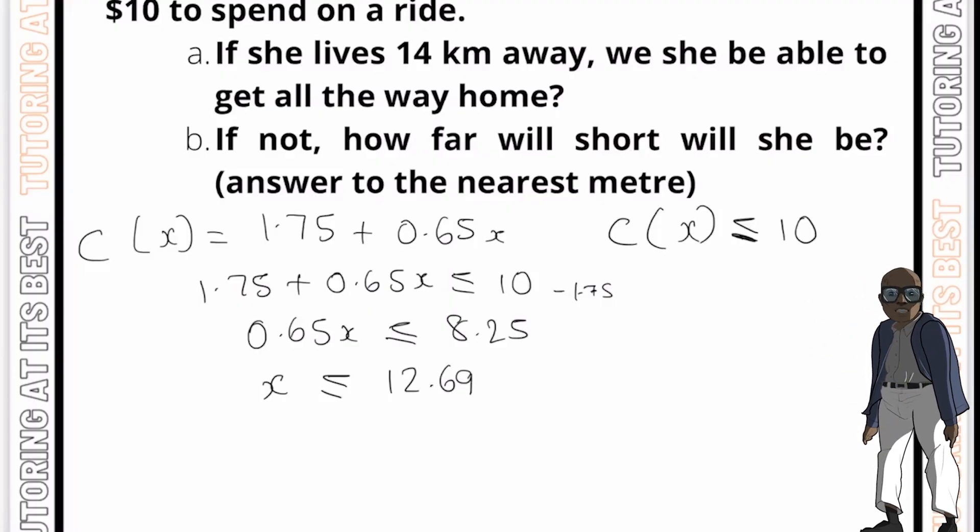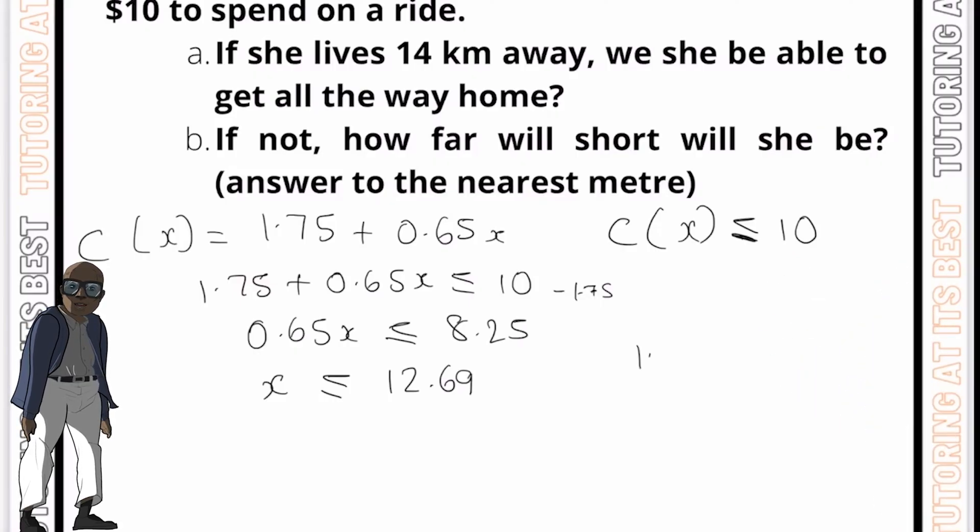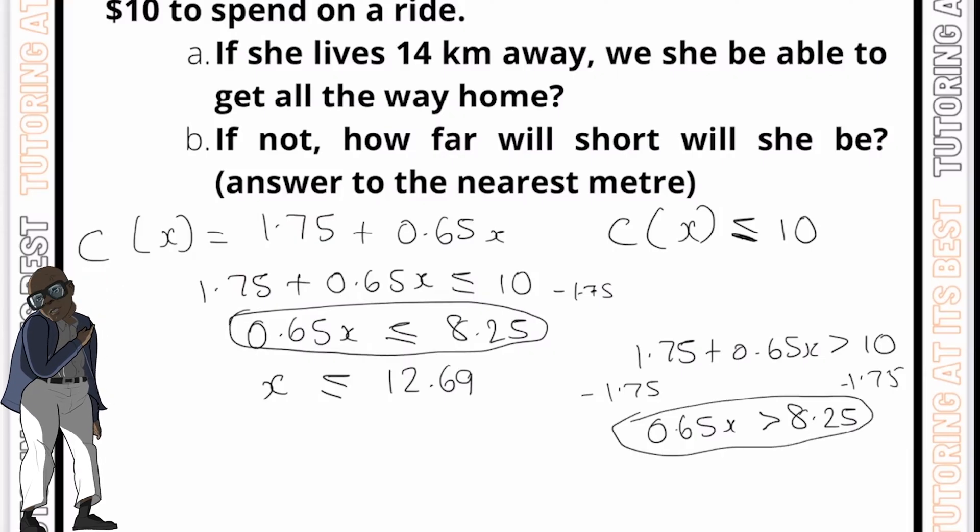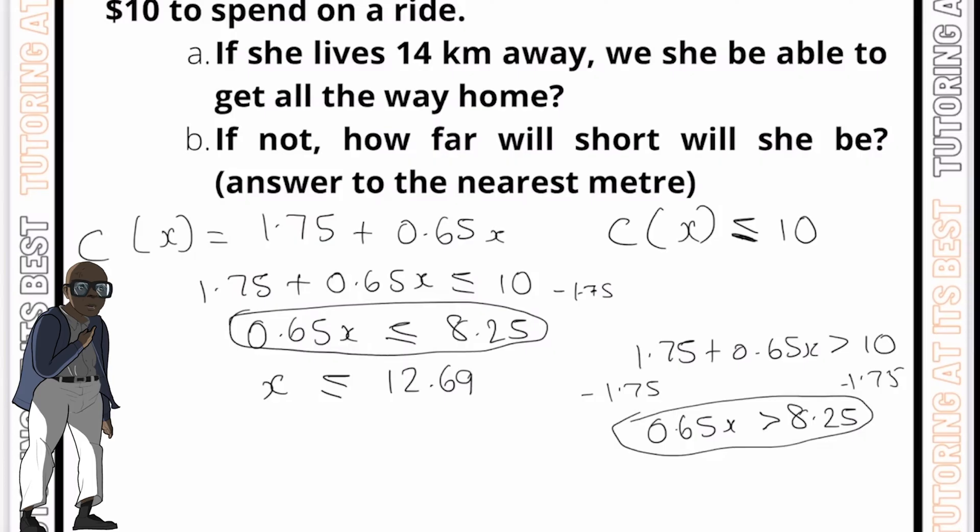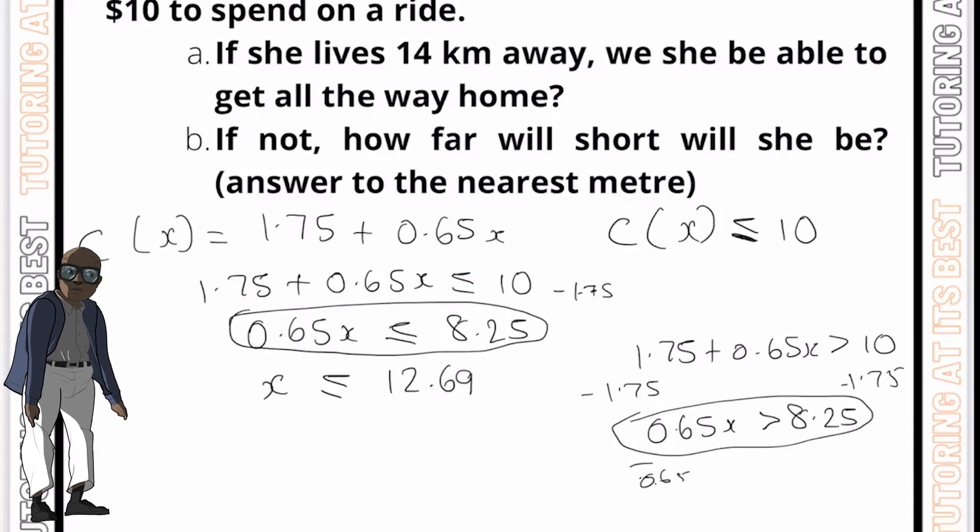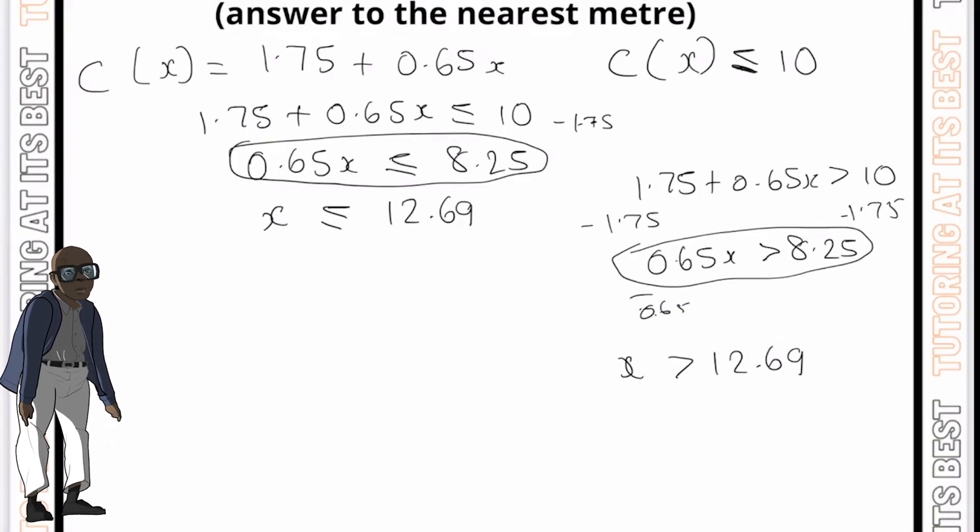So let's use the inequality that we've been working with. So now we can simply state 1.75 plus 0.65x is greater than 10. And so if we subtract 1.75 from both sides, what are we left with? Well, it's the same 0.65x, but this time is greater than 8.25. Remember in our previous step, this was less than or equal to, but now we're working out how much short she will be. So if we divide both sides by 0.65, what are we left with? So x is greater than 12.69 kilometers.